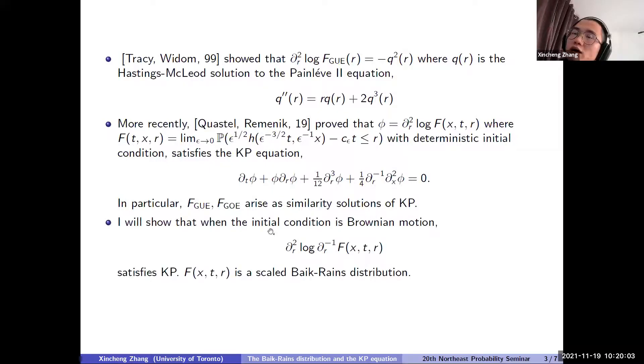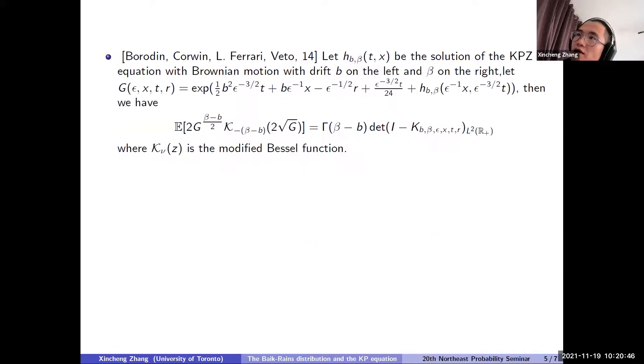So in this talk, I will show that when initial condition is Brownian motion, the second partial in R of the log of partial R inverse of the function F satisfies KP. So the big F is defined similarly here, but with the Brownian motion initial condition. And this big F(X,T,R) will be the scaled Baik-Rains distribution. So the weird thing is here you have a partial R inverse. So you should interpret this partial R inverse as like you're taking integral from negative infinity to R. And this operator is particularly weird because for all the other distributions we investigate, there's no such operator appearing.